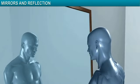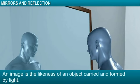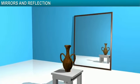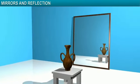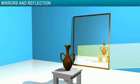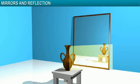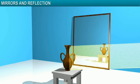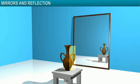All of you can recognize an image when you see it. An image is the likeness of an object carried and formed by light. What you find in a plane mirror is your image. Light incident on an object is reflected back by the object, and that reflected light incidents on the mirror and is reflected again.